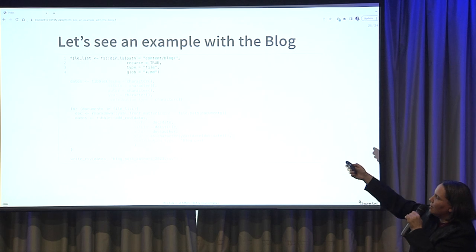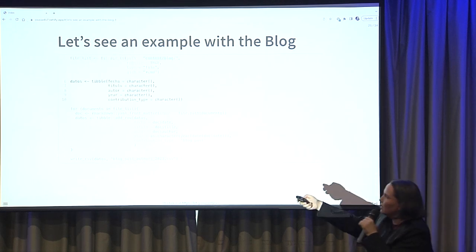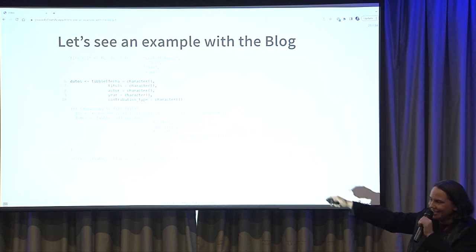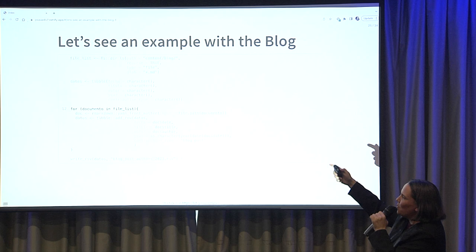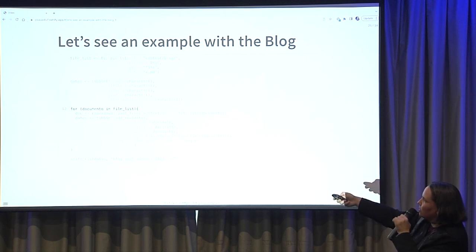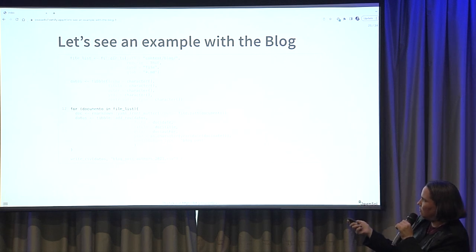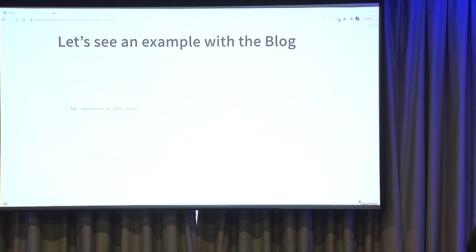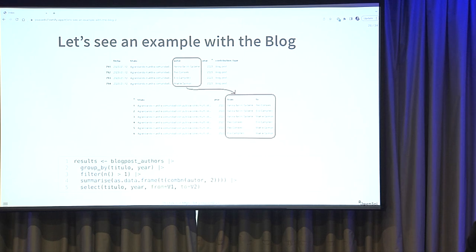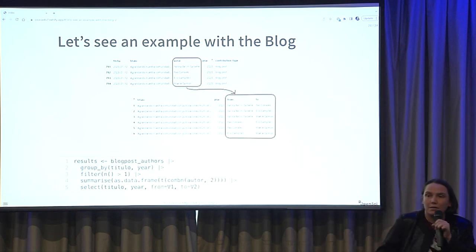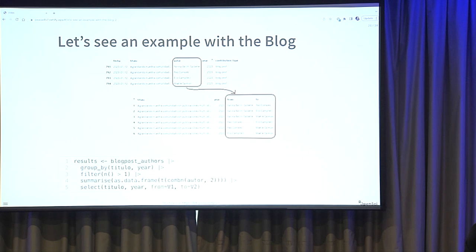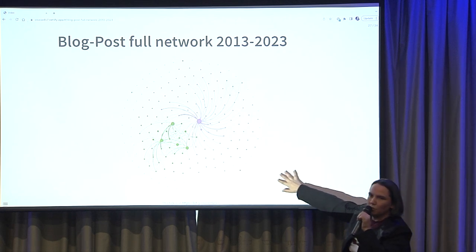We create the list, create a table with the information we need. We look through this list, get each one of the documents, read the YAML, put the data in the table, and then create a CSV. Then we transform this information into the format that a network needs — we need a 'from' and a 'to'. And then we can plot the network.